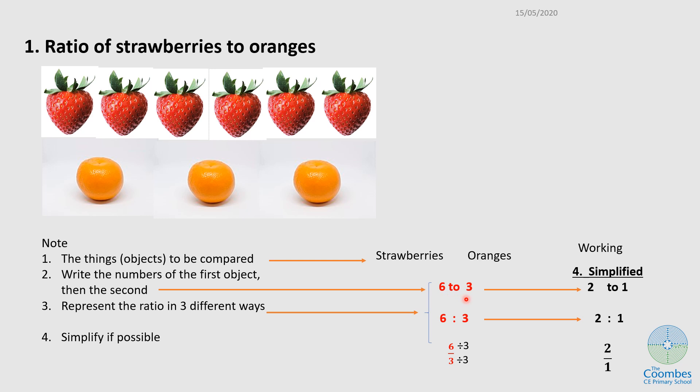You can write it as a word: six to three. There are other ways you can write it. You can write it as six to three with a colon, or as a fraction, six over three.